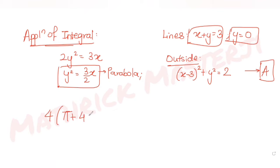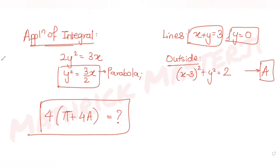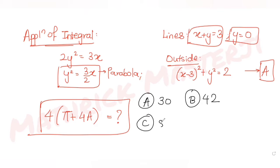The question asks us to find the value of 4π + 4a. The answer choices given are 30, 42, 84, and 102. We need to figure out which one is correct.